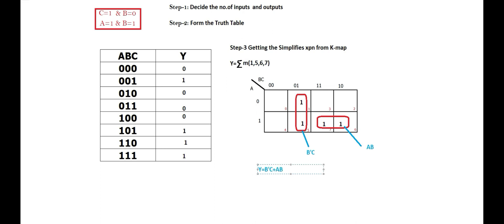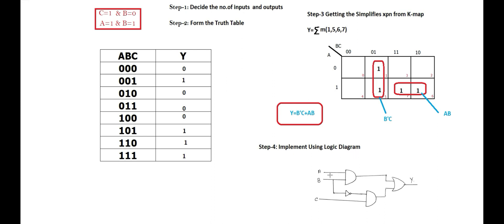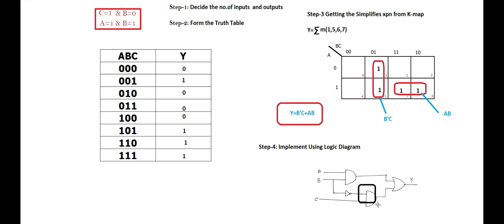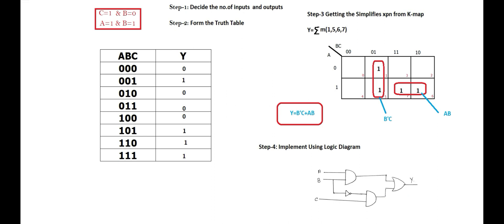Step four is to implement using a logic diagram. The final expression is Y = B'C + AB. Variable B is connected to an inverter to get B', then B' and C are fed into an AND gate to produce B'C. Variables A and B are fed into another AND gate to produce AB. Both AND gate outputs are connected to an OR gate, giving the final output Y.